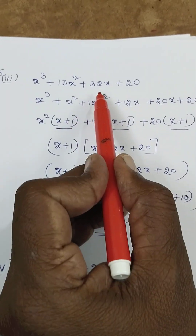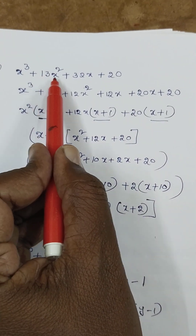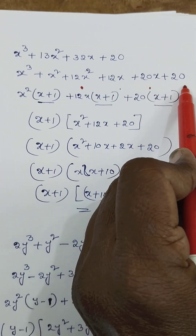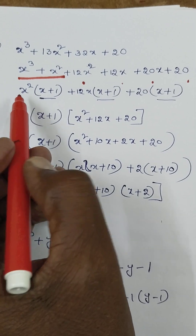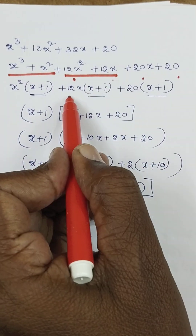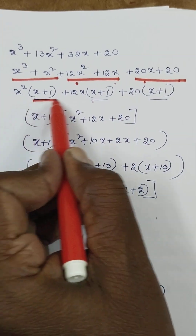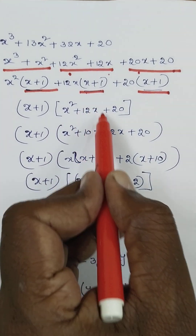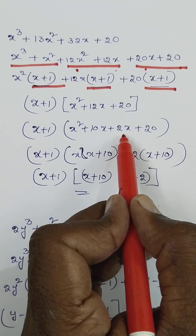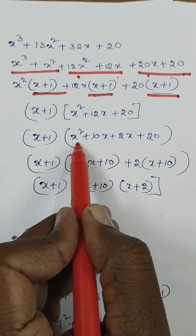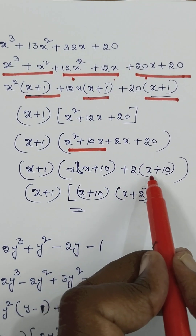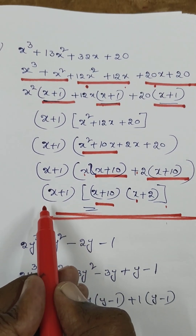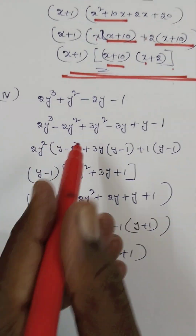Third one: x cubed plus 13x squared plus 32x plus 20. Rewrite 13x squared as x squared plus 12x squared, and 32x as 12x plus 20x. x squared is common in the first two terms giving x plus 1; 12x is common giving x plus 1; 20 is common giving x plus 1. So x plus 1 is common overall. Remaining is x squared plus 12x plus 20. Split 12x as 10x plus 2x; x is common giving x plus 10, and 2 is common giving x plus 10. So the factors are x plus 1 into x plus 10 into x plus 2.